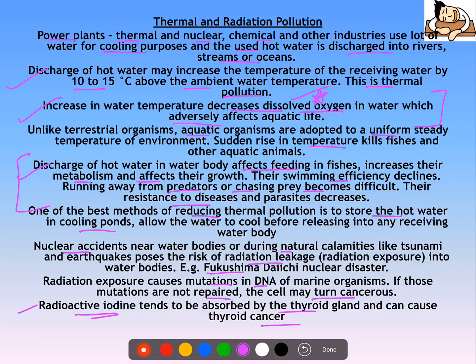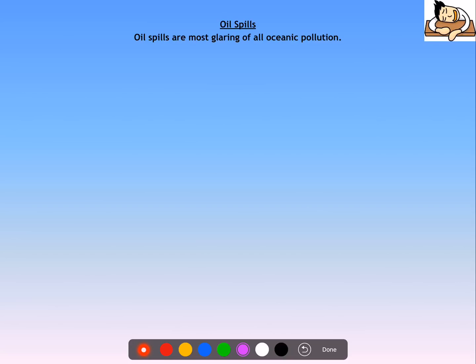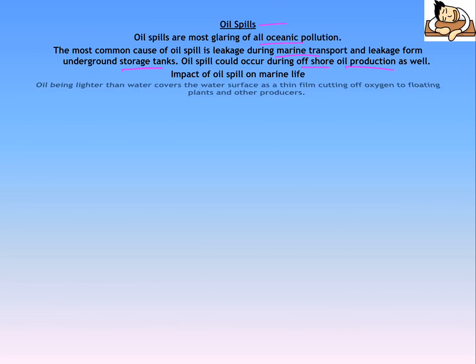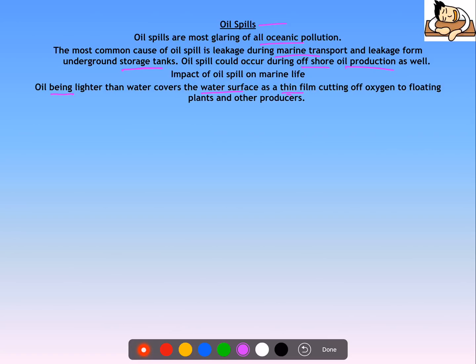Oil spills are one of the most glaring forms of oceanic pollution. The most common causes are marine transport, leakage from underground storage tanks, and offshore oil production. Since oil is lighter than water, it covers the water surface as a thin film, cutting off oxygen to floating plants and other producers, causing them to die.